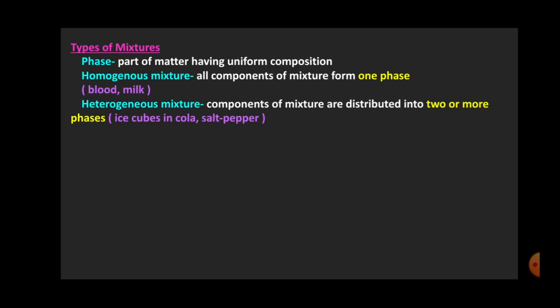Next is heterogeneous mixture. Hetero means different. When the components of a mixture are distributed into two or more phases — that means the substances are in different states of matter and can be very clearly separated — then it is called a heterogeneous mixture. Examples: ice cubes in cola, when we put ice cubes in a cold drink, that is a heterogeneous mixture. Salt and pepper is also a heterogeneous mixture.